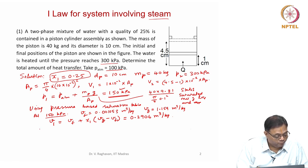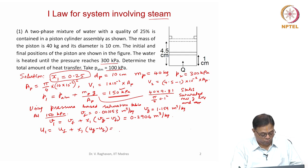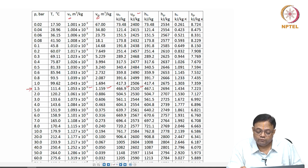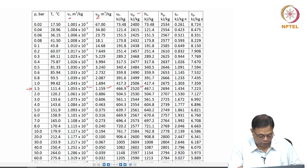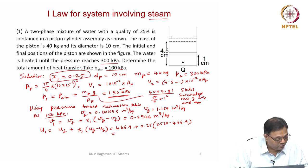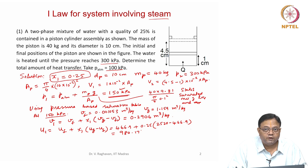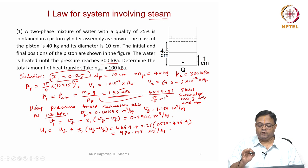We can also find U1 = Uf + x1 × (Ug − Uf). From tables at 150 kilopascals, Uf = 466.9 kJ/kg and Ug = 2520 kJ/kg. So U1 = 466.9 + 0.25 × (2520 − 466.9) = 980.175 kJ/kg. State 1 is now fixed and its properties are determined.